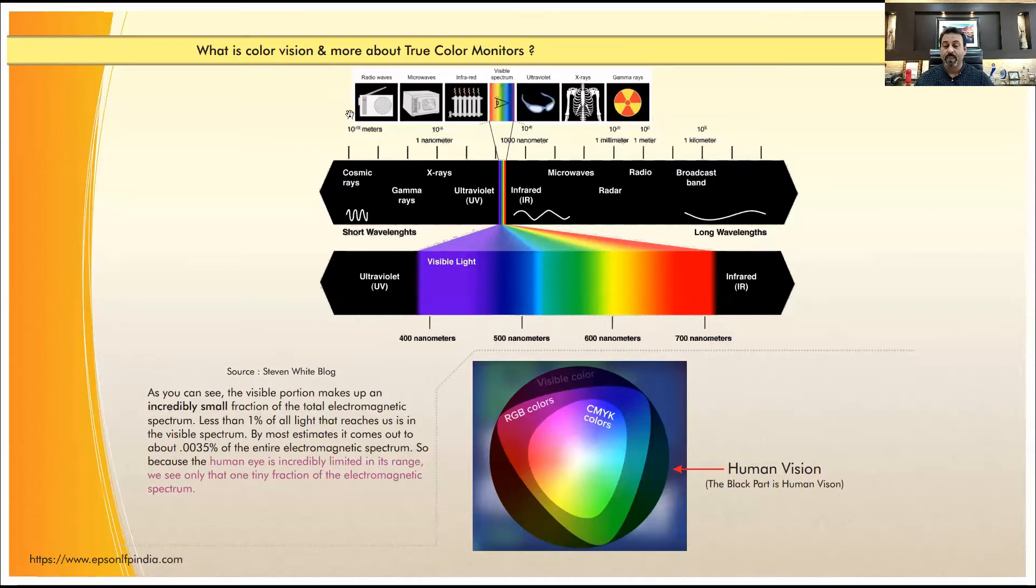I'll tell you how. First of all, we will get started from the scratch of the color spectrum. This is the color spectrum. Here you can see from ultraviolet till infrared, we have a very limited vision from 400 nanometers to 700 nanometers. If I travel, it's starting from cosmic rays, gamma rays, x-rays, ultraviolet, infrared.